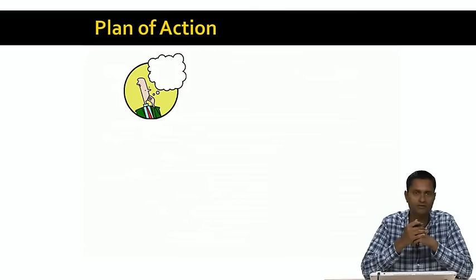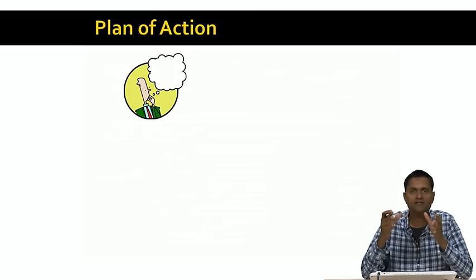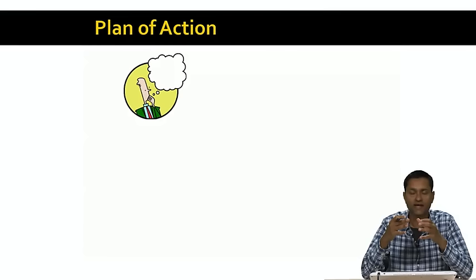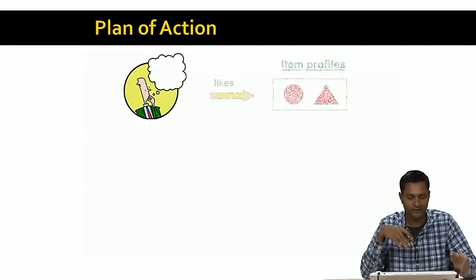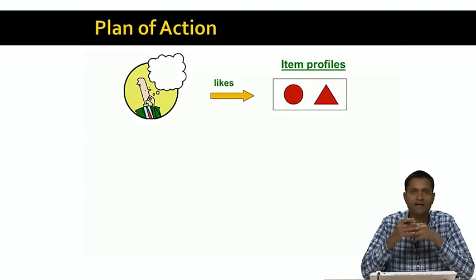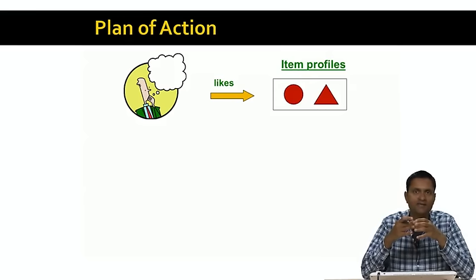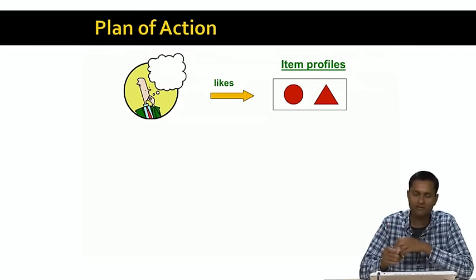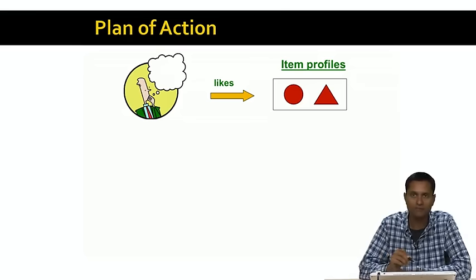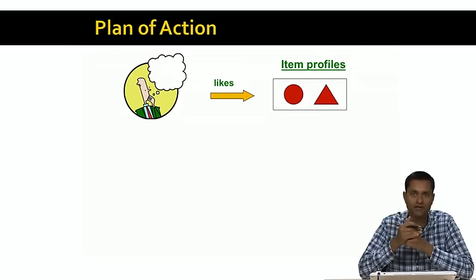Here's our plan of action. We're going to start with the user and find out a set of items the user likes, using both explicit and implicit data. For example, we might look at the items that the user has rated highly and the set of items the user has purchased. For each of those items, we are going to build an item profile — a description of the item.